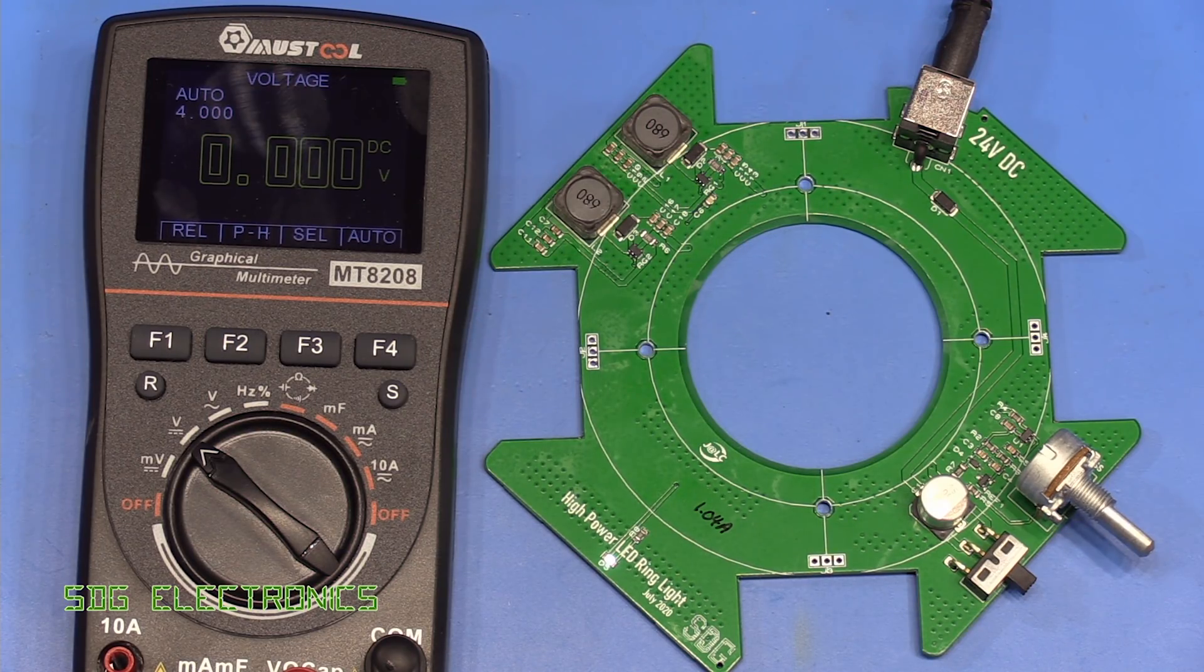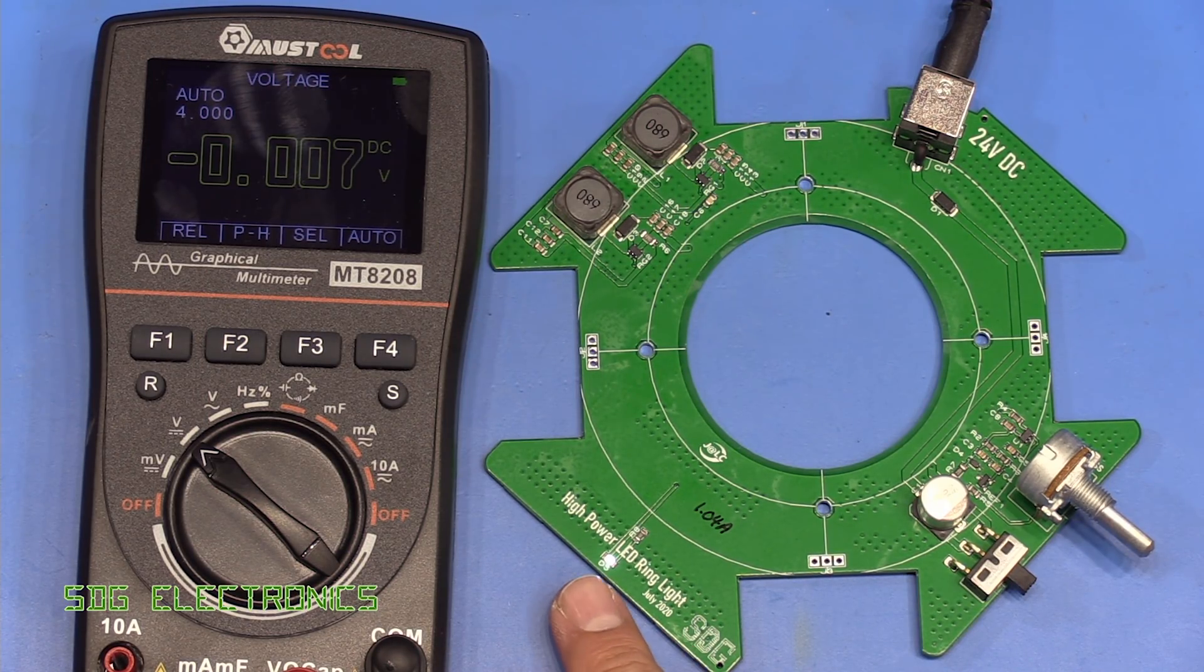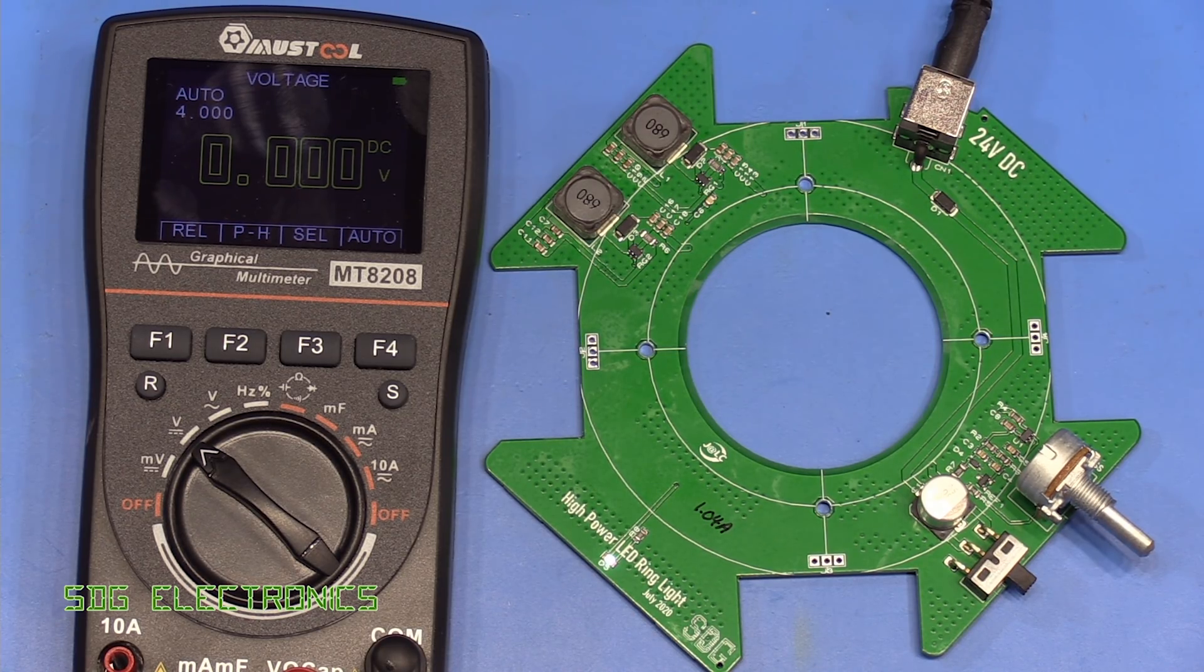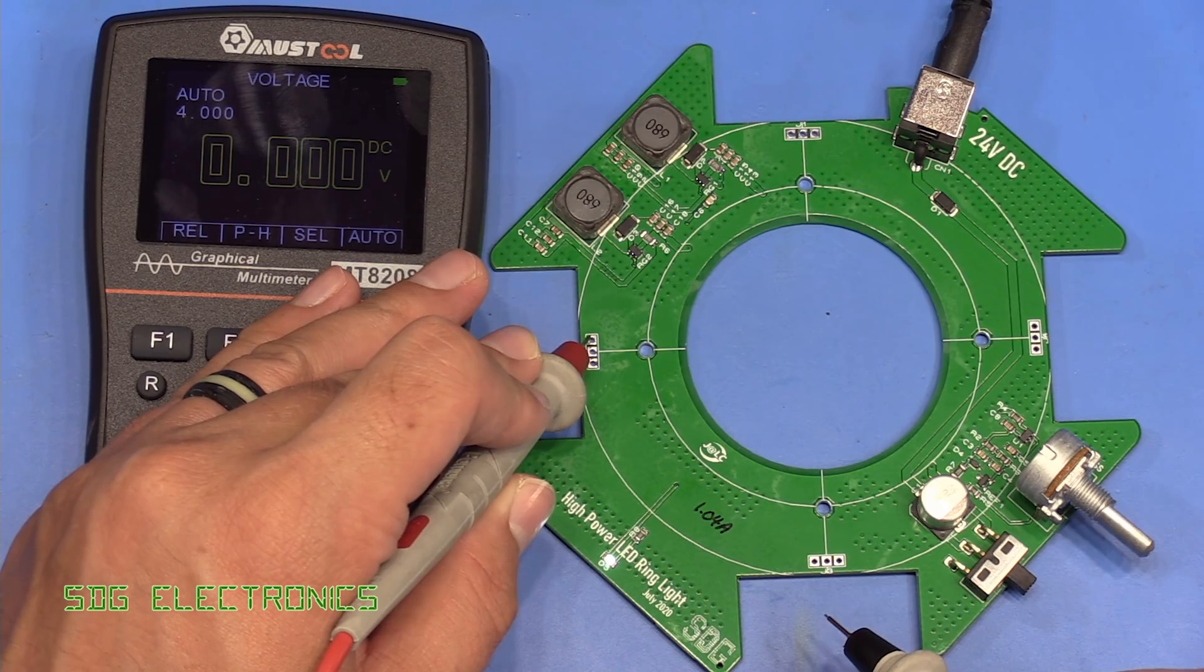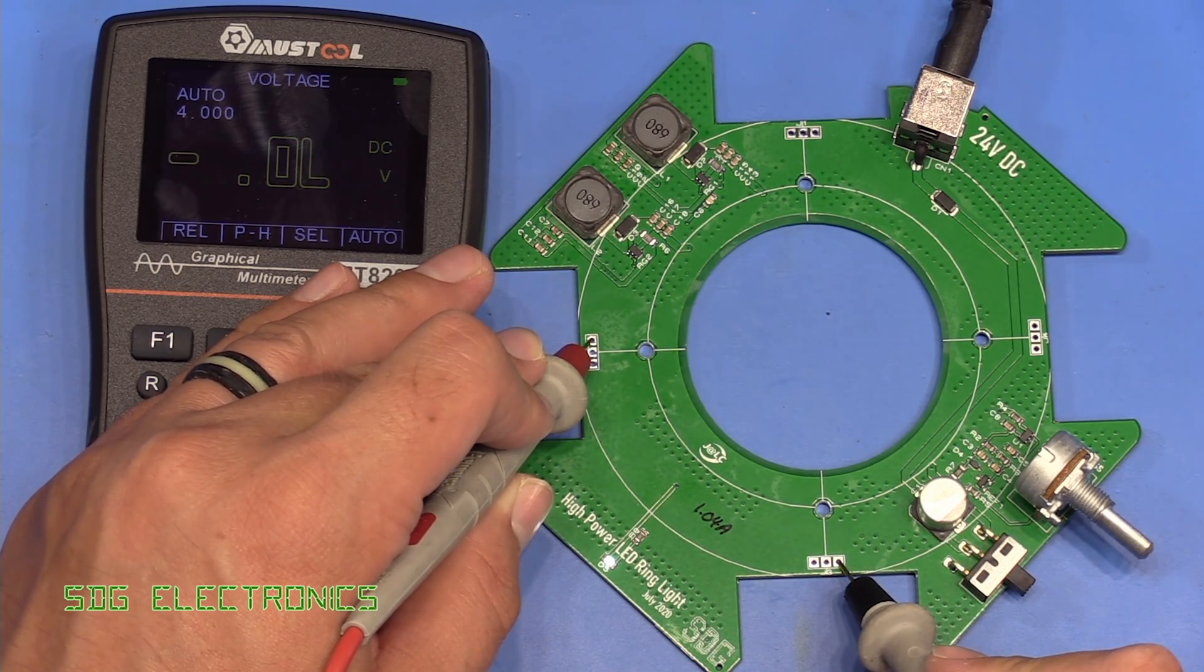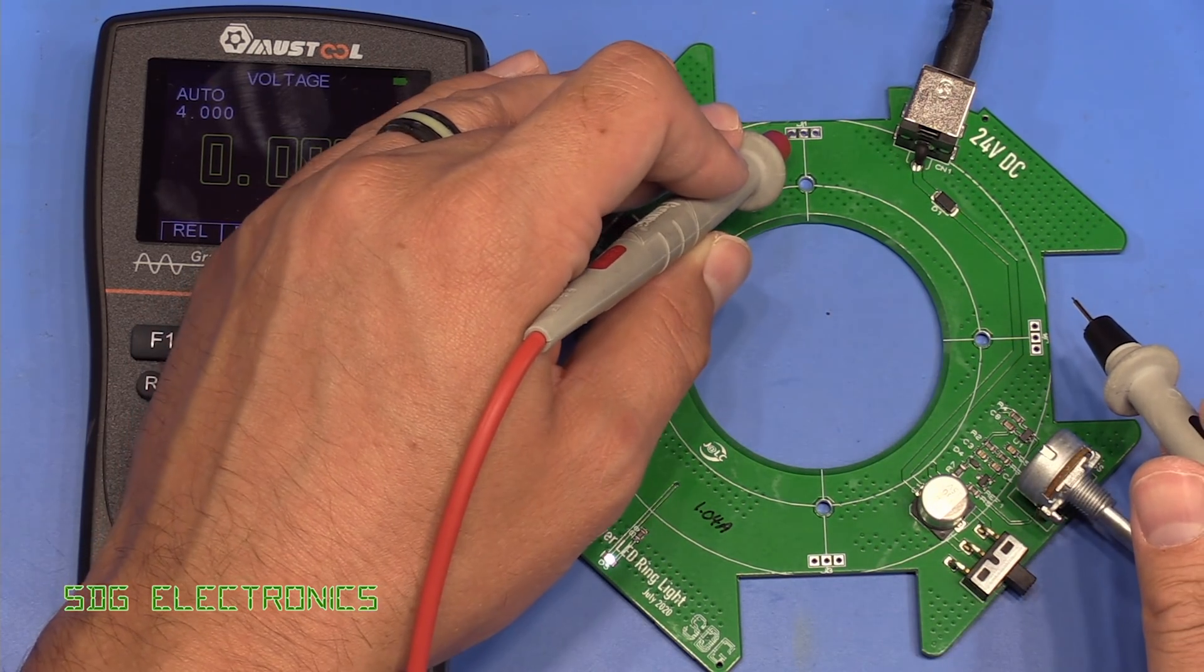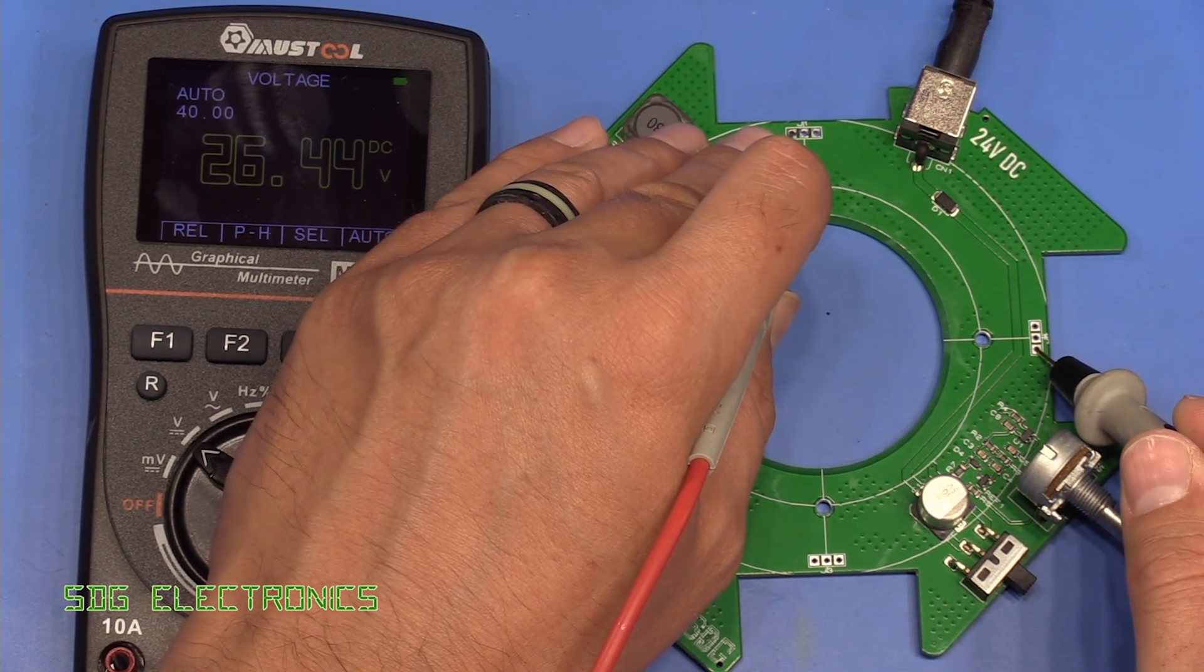So a quick test to make sure we've not done anything silly. I've just powered it up and we've got the LED lighting up here. It's drawing 12 milliamps from the power supply. And if we test across the LED pads, we've basically got our incoming supply voltage, which is what we expect.